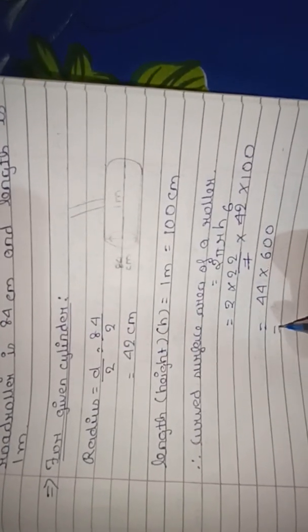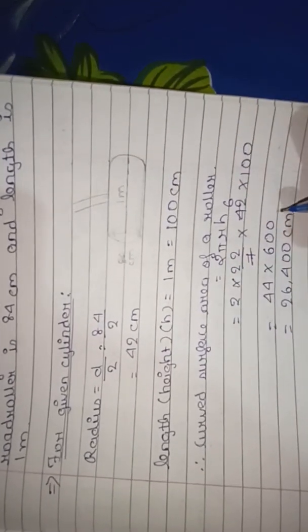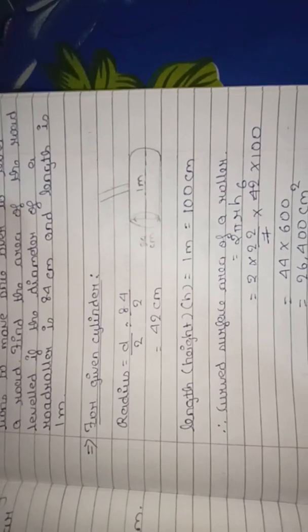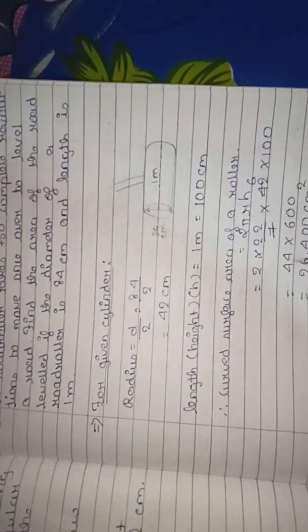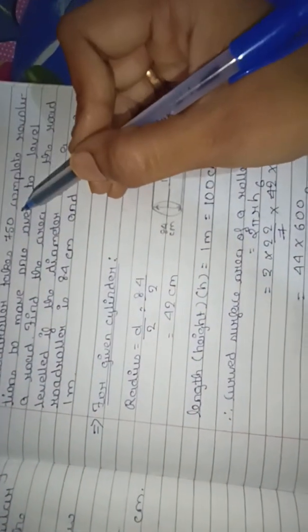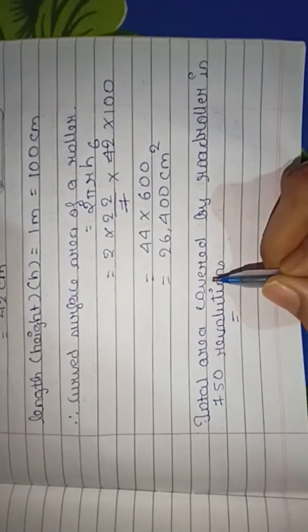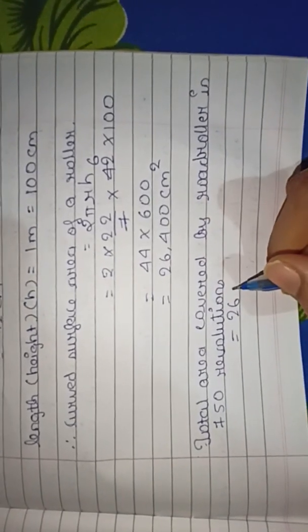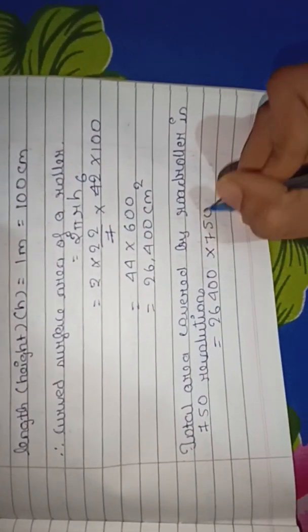That gives us 26,400 cm² as the curved surface area. Now, the total area covered by the road roller in 750 revolutions is: 26,400 × 750.